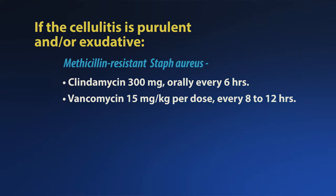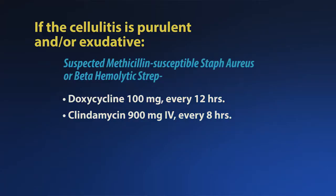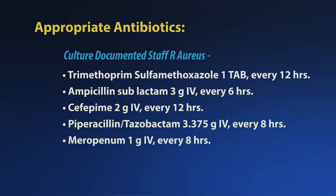If the cellulitis is purulent and/or exudative but has no drainable abscess, then the following should be considered. For those at risk for methicillin-resistant staph aureus, consider clindamycin 300 mg orally every six hours, or vancomycin 15 mg per kilogram per dose every eight to 12 hours. For those with suspected methicillin-susceptible staph aureus or beta-hemolytic strep, then doxycycline 100 mg every 12 hours, or clindamycin 900 mg IV every eight hours should be considered. For those who are immunocompromised or unable to take oral antibiotics, an infectious disease consult should be requested for consideration of daptomycin, ceftaroline, or linezolid. For culture-documented staph aureus, trimethoprim-sulfamethoxazole one tablet every 12 hours is a consideration.